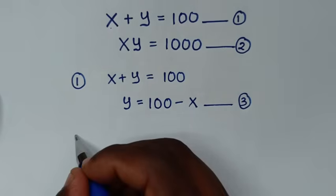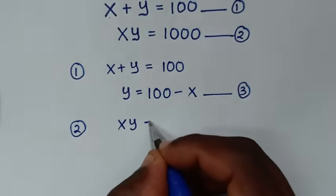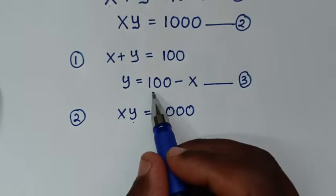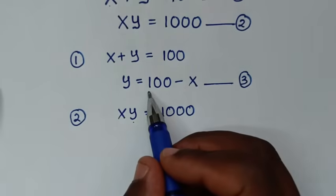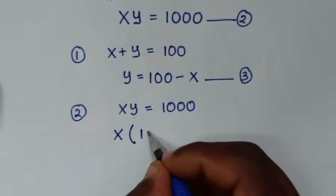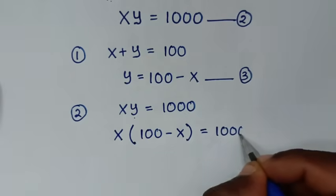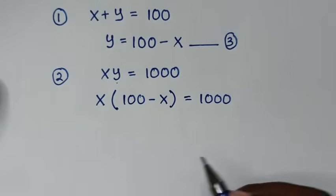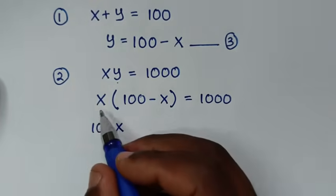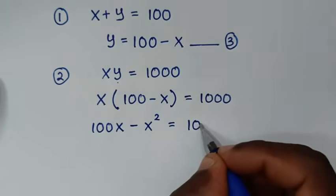Then in the next step, from equation 2, which is x times y is equal to 1000, we substitute y using equation 3: y is equal to 100 minus x. So it will be x times bracket 100 minus x bracket is equal to 1000. Expanding: 100x minus x squared is equal to 1000.